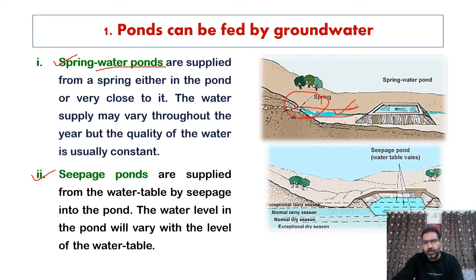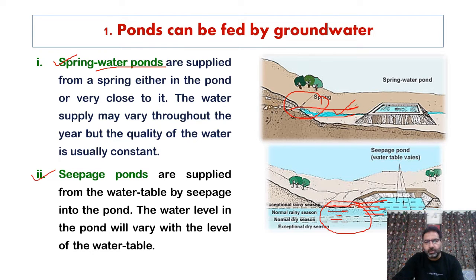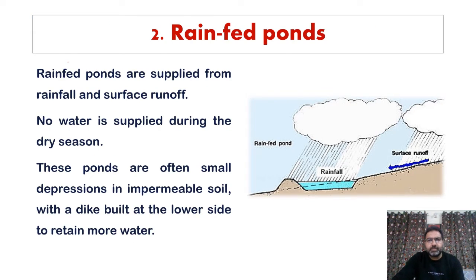The second kind of groundwater-fed pond is the seepage pond. These are supplied water directly from the water table. If the water table is high, that water gets seeped into the pond and the pond gets filled up. However, it is dependent on the season — during the rainy season the water level is high and there is enough water, but during the dry season the water level gets low and the pond begins to dry.